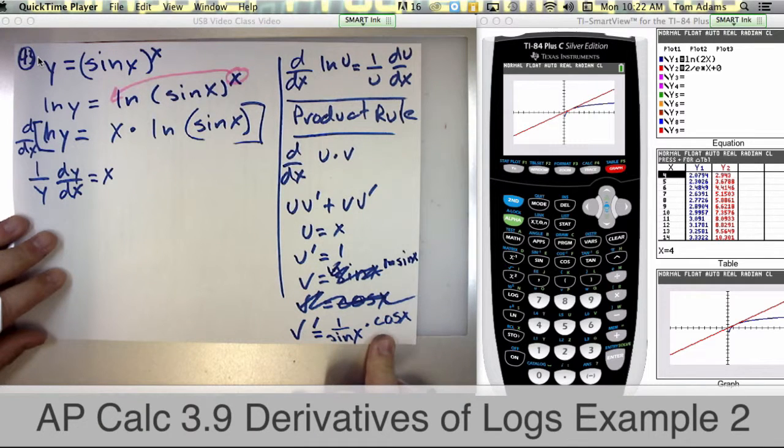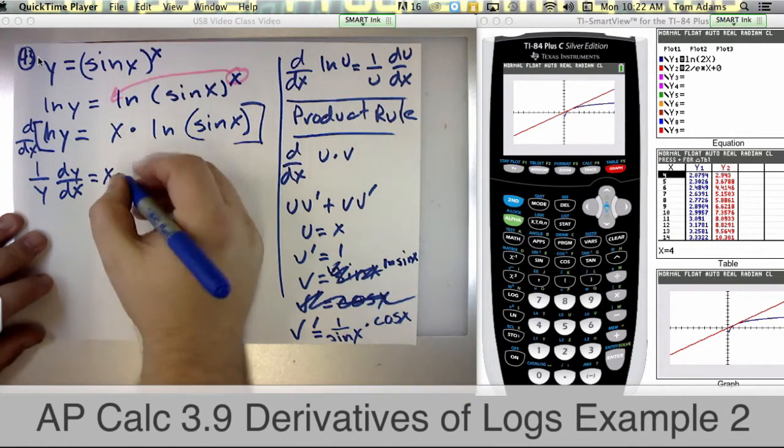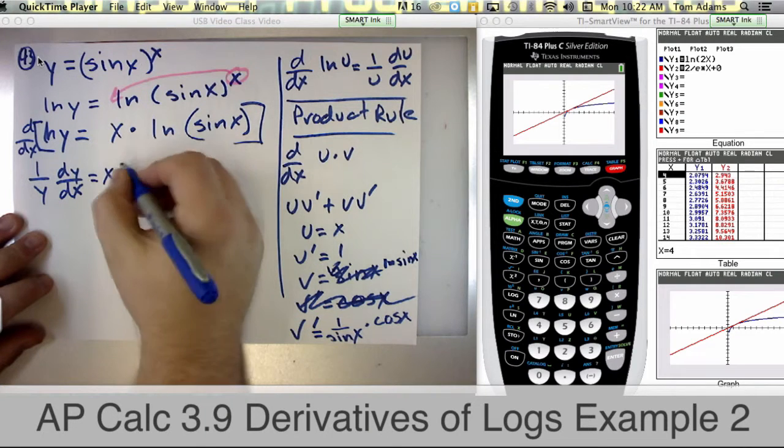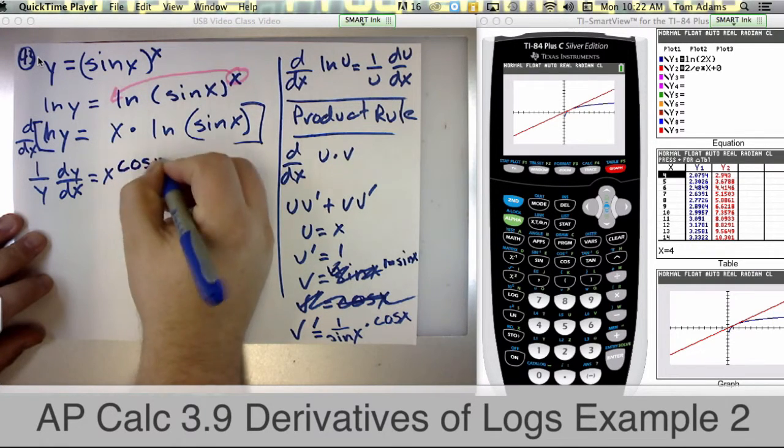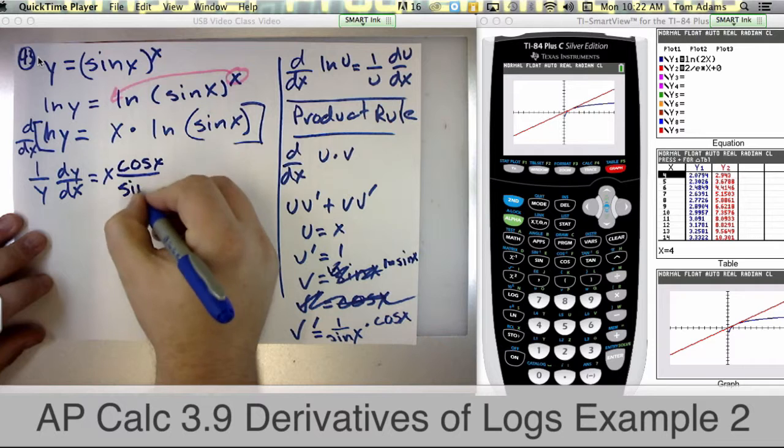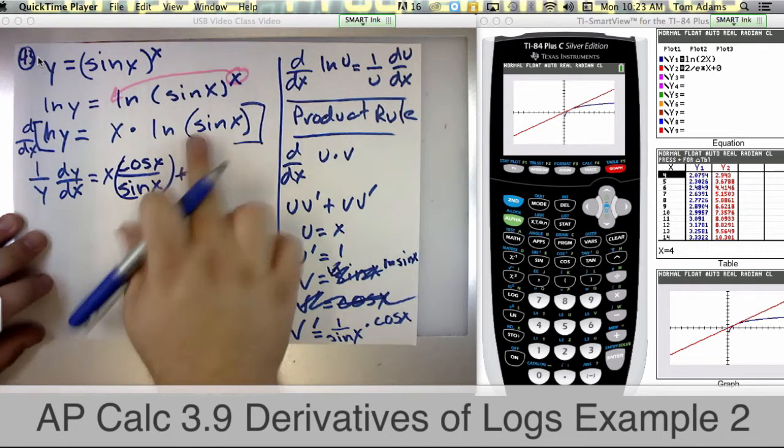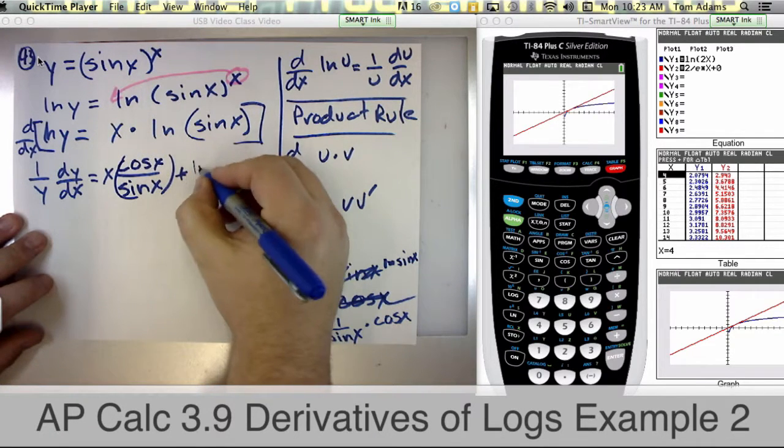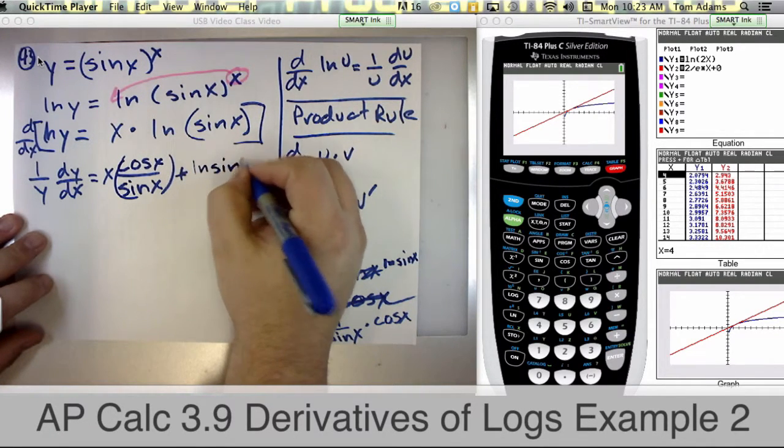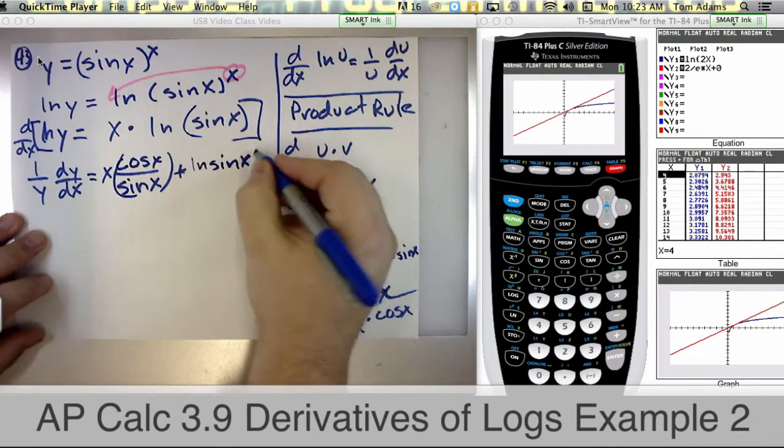What is cosine over sine though? Theta. No, tangent. It's tangent. So let me just write it down though and then we'll switch it later. So this is going to be times cosine of x all over sine of x plus v by itself which is just the natural log of sine of x times the derivative of x which is just 1.